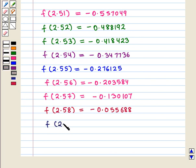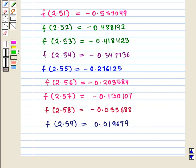f(2.59) is equal to 0.019679. Now, here again we have a sign change between successive hundredths. This means there is a zero in between 2.58 and 2.59.